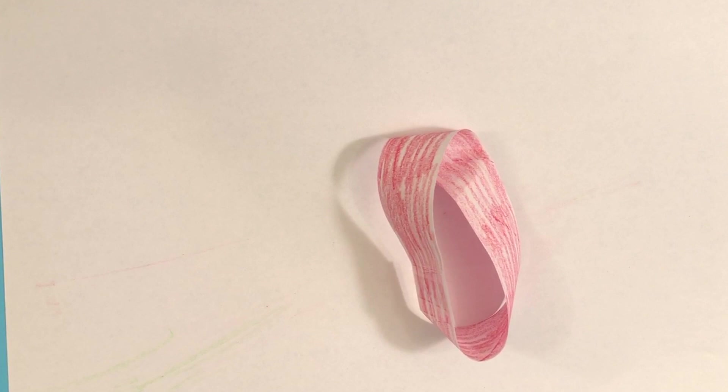What's happening here? You colored in the front, but that was everything. This piece of paper has a front, but no back. How could that be?